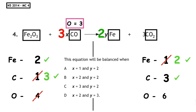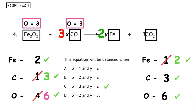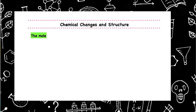We also have oxygens present in the iron oxide — three inside that box. Three plus three equals six. Carbons balance — tick them off. How many oxygens on the left? Six. On the right? Six. Those balance, so the equation is balanced when x equals three and y equals two — multiple choice answer C.